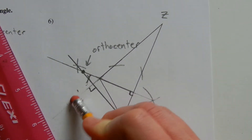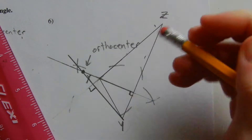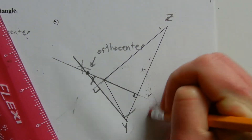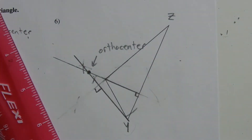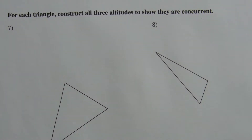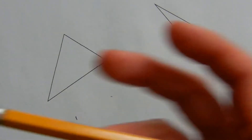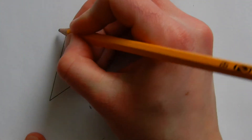I'll clean this up a bit to make it easier to see, erasing some of my extraneous marks. There is the orthocenter. For numbers 7 and 8, it says to construct all three altitudes for each triangle to show that they are concurrent. Concurrent means they will intersect at the same point, which is what forms the orthocenter. For number 7, I'll label this triangle A B C.